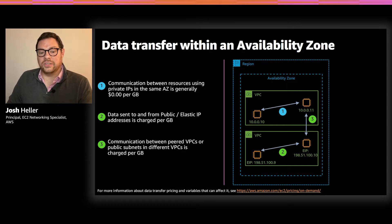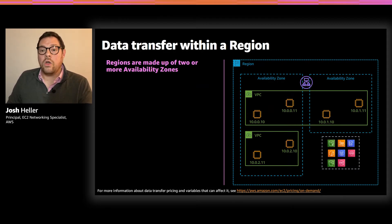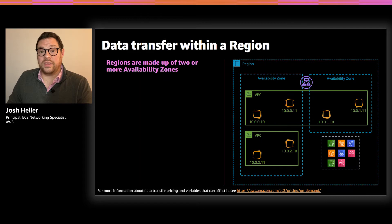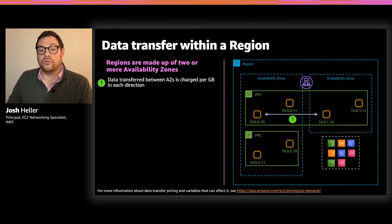Now that we've discussed data transfer within a single availability zone, let's zoom out and look at data transfer between multiple AZs. We're still working within a single region, but now we're building across two availability zones. A single VPC spans across all the AZs in a given region. When an EC2 instance in one AZ communicates with an EC2 instance in the other AZ, they've crossed that AZ boundary and incur inter-AZ data transfer usage — also called intra-region data transfer. That's charged in both directions on a per-gigabyte basis.